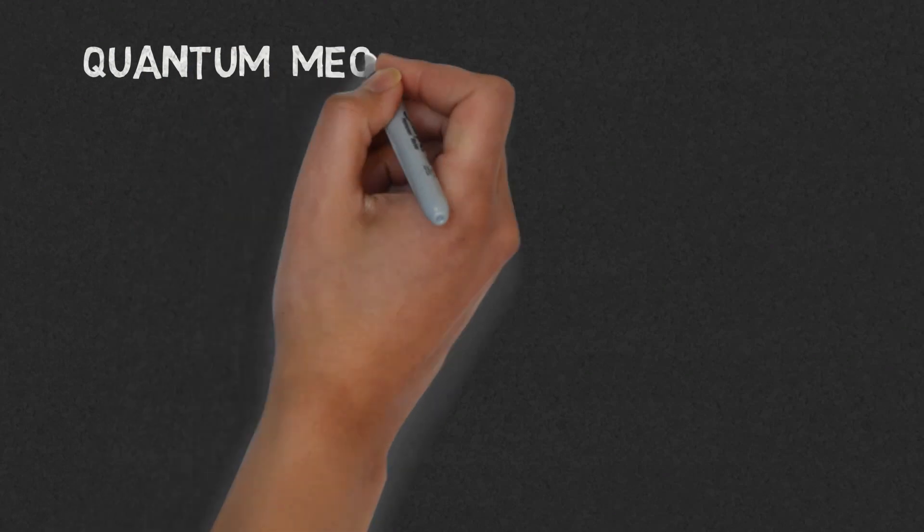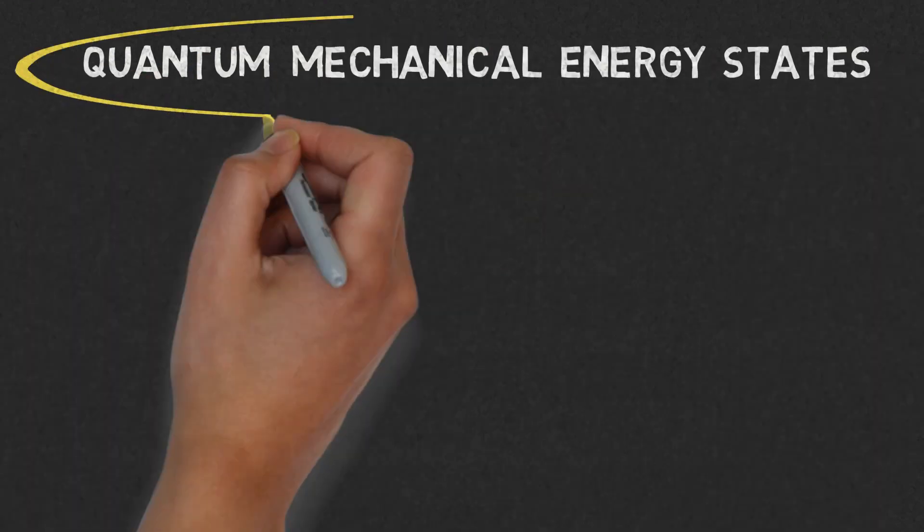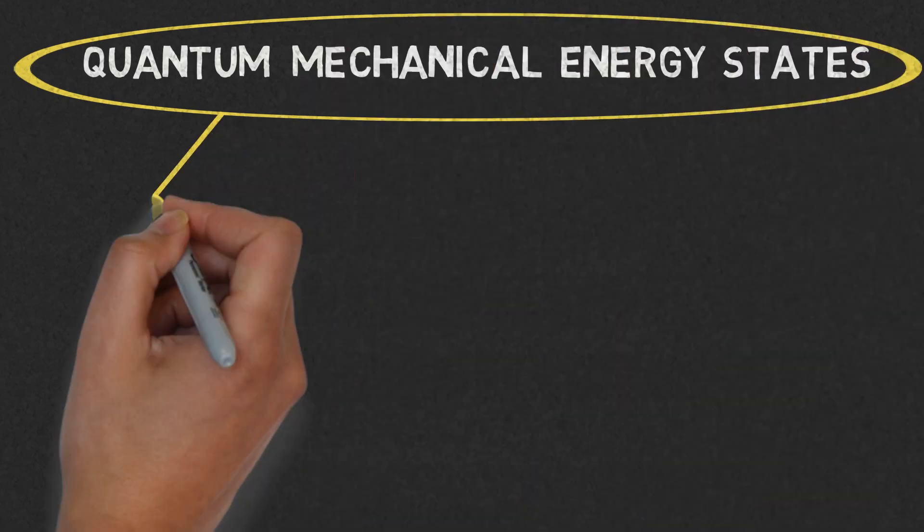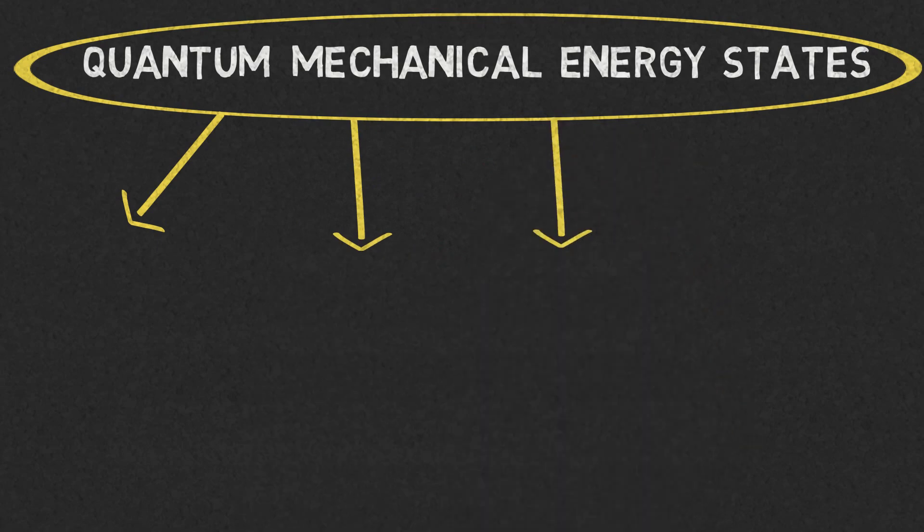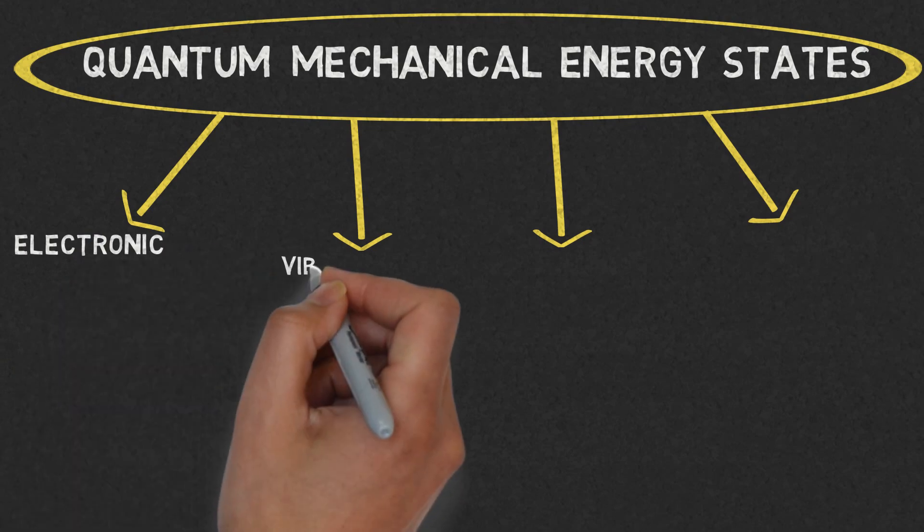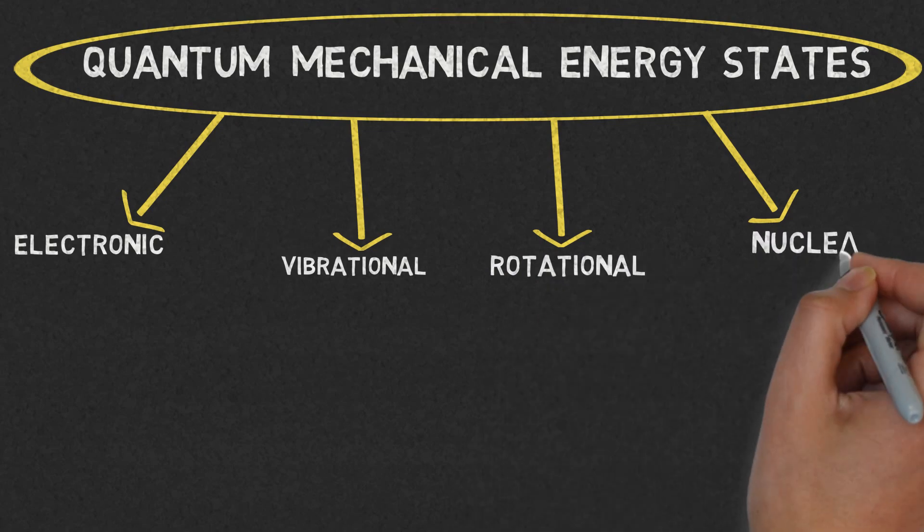Now, let us learn about quantum mechanical energy states. These determine the total energy of a molecule or an atom. There are four quantum mechanical energy states for every molecule or atom: electronic energy, vibrational energy, rotational energy, and nuclear energy.